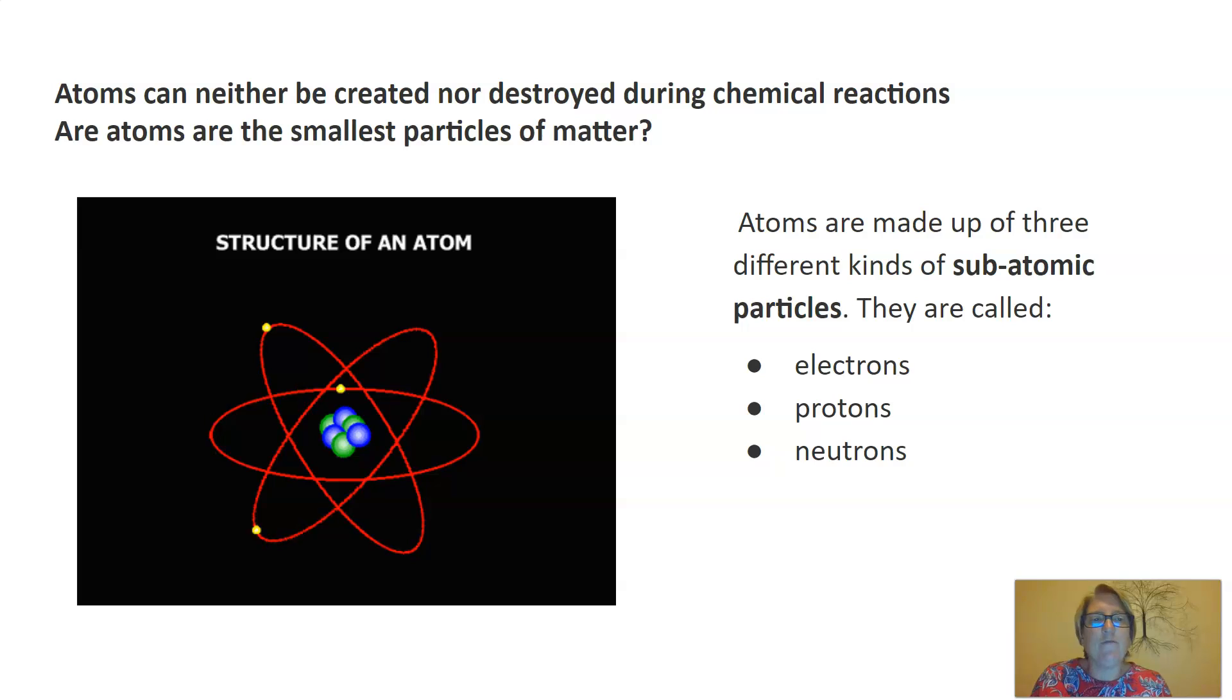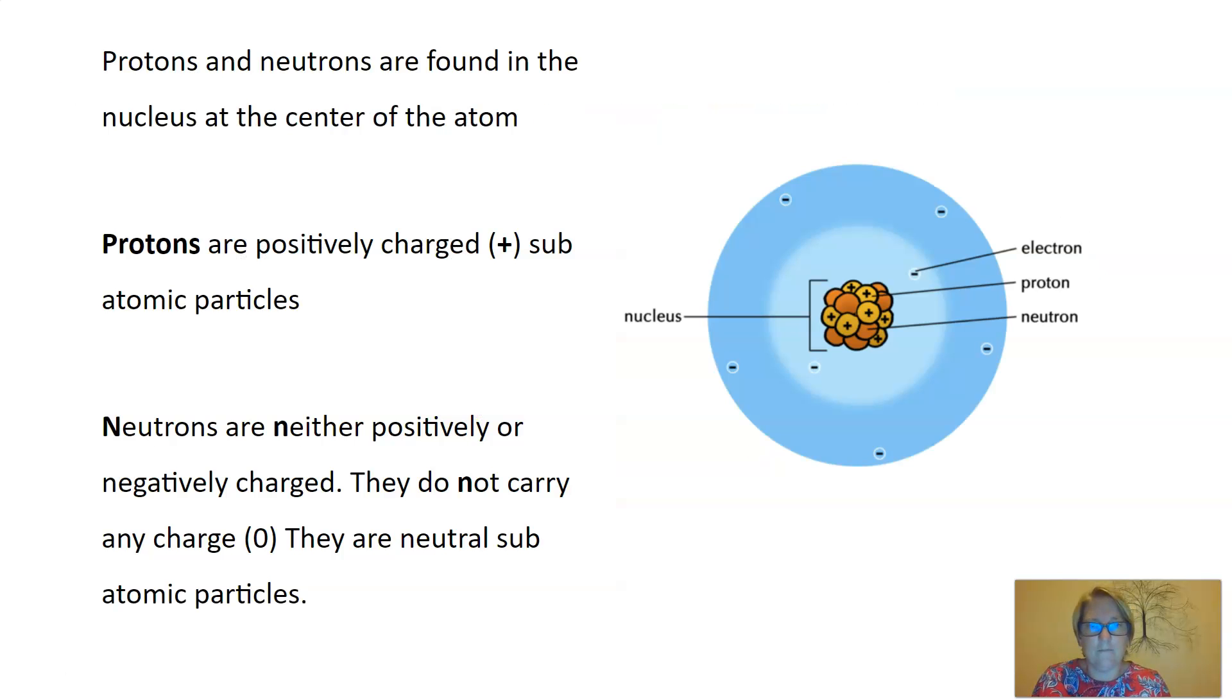Atoms are made up of three different kinds of subatomic particles. These are called electrons, protons, and neutrons. Protons and neutrons are found in the nucleus at the center of the atom. If we have a look at this diagram here, there is the nucleus at the center of the atom. At the center of the atom, we find protons, which are linked with a plus sign, and we find neutrons that are linked with nothing.